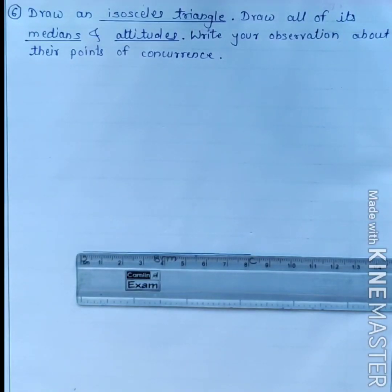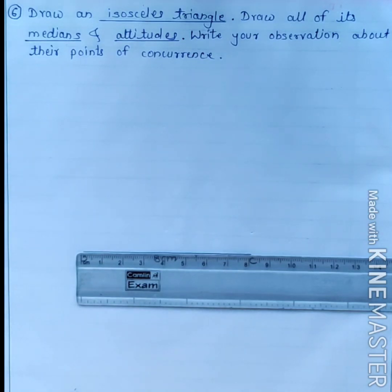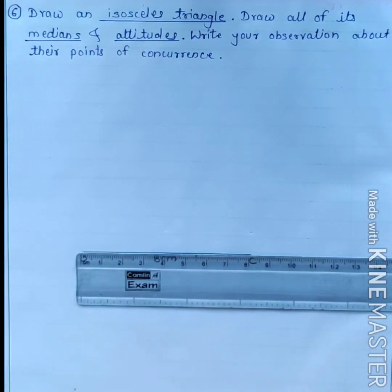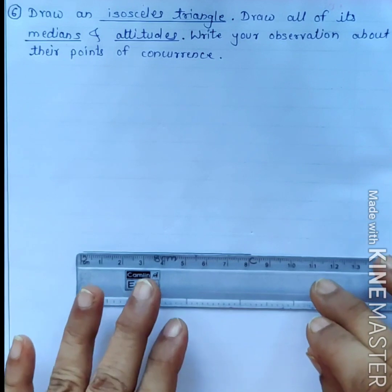Question number 6 from practice set 4.1: Draw an isosceles triangle, draw all of its medians and altitudes, and write your observation about their points of concurrence. An isosceles triangle is a triangle in which two sides are congruent. So we are going to draw this triangle.